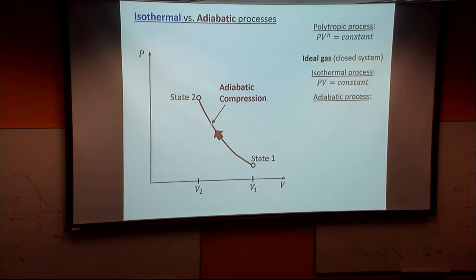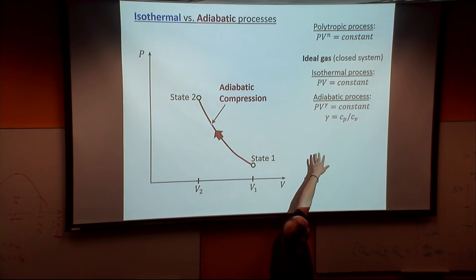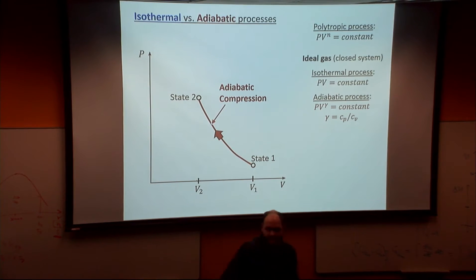So I have adiabatic compression. With that, I have a polytropic process, and I have PV to the n equals a constant. If I have an ideal gas and an adiabatic process, then I can do PV to the gamma, where gamma is the ratio between specific heat at constant pressure and specific heat at constant volume.